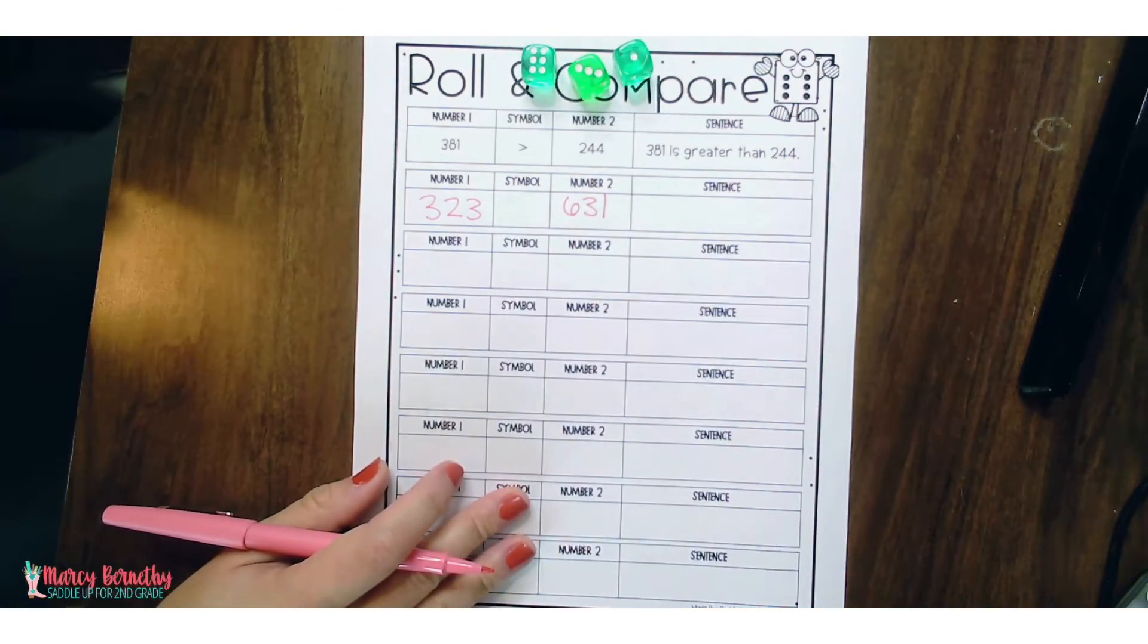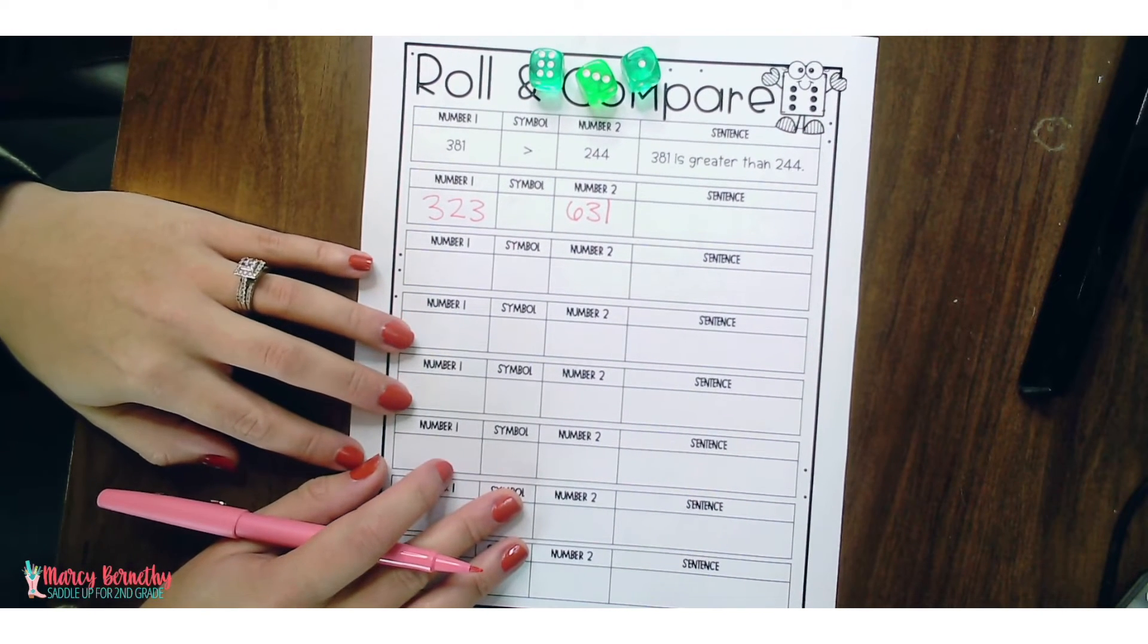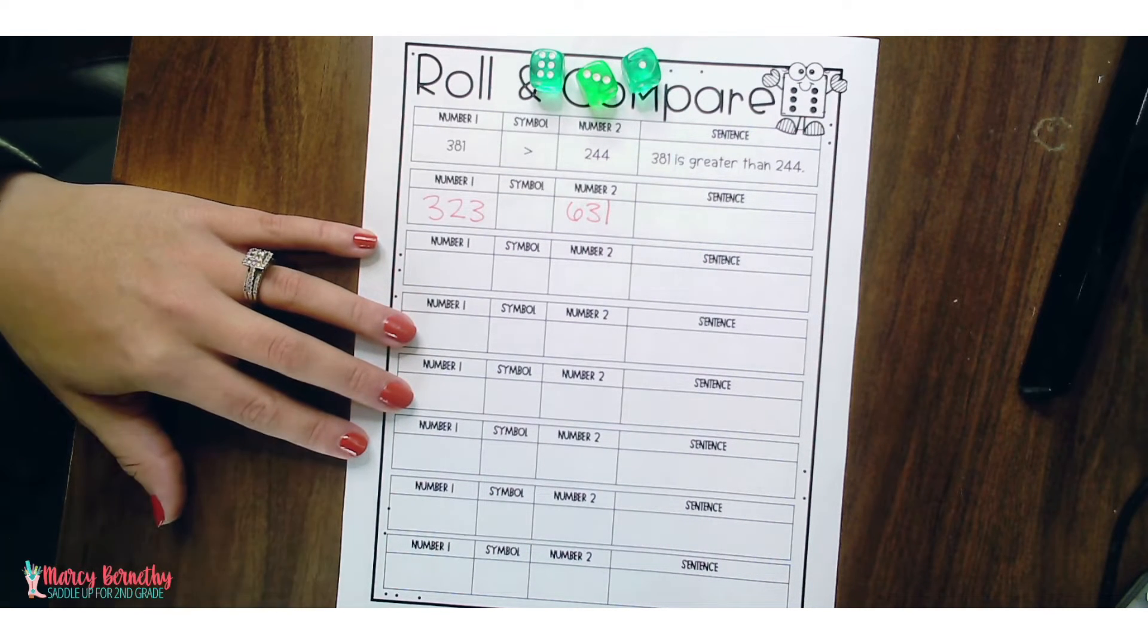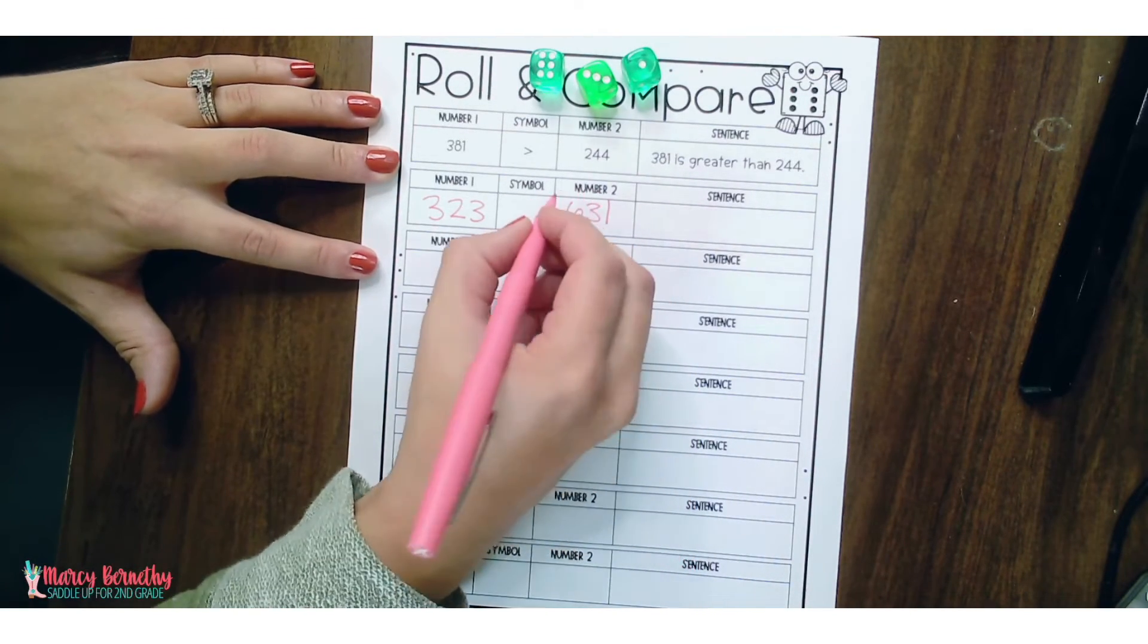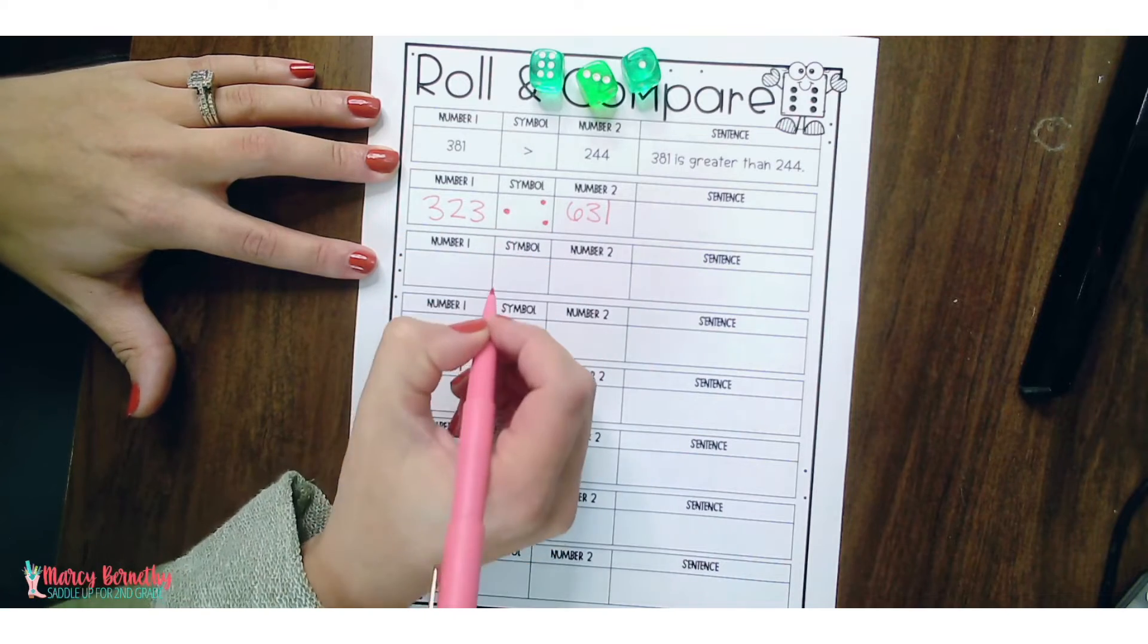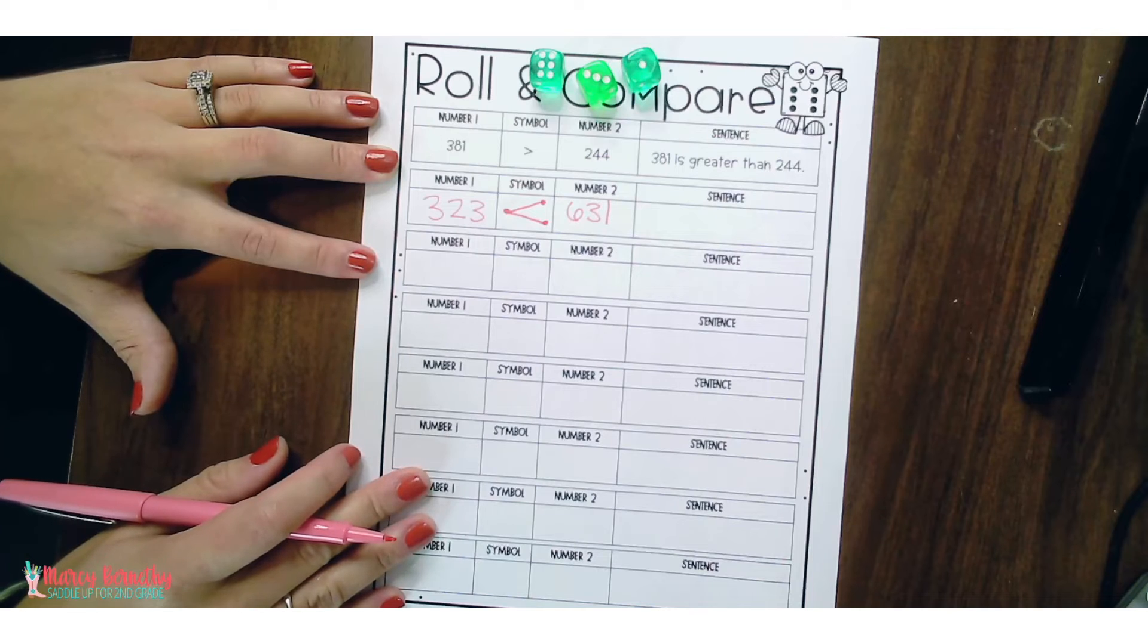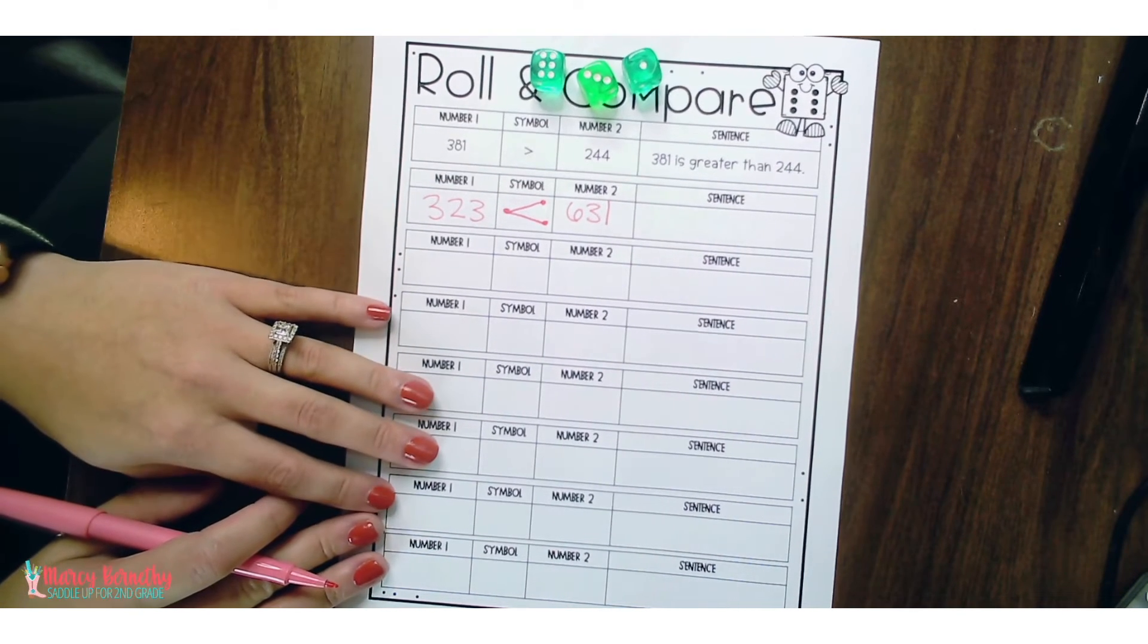Now when we want our students to draw the correct symbol, the dot method can help them not get confused on which way their symbol should be drawn. So remember with the dot method, the larger number is going to get two dots. The smaller number is going to get one dot. Then they can draw two lines to form the correct symbol to compare these two numbers.